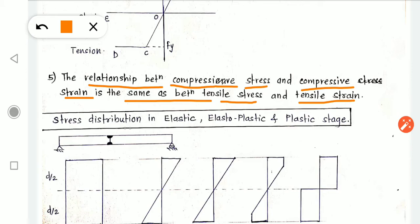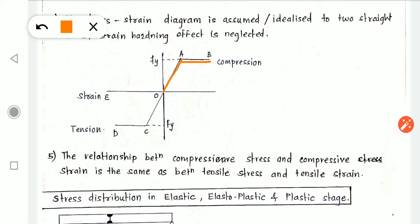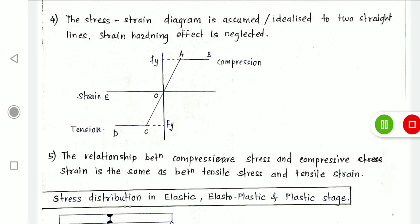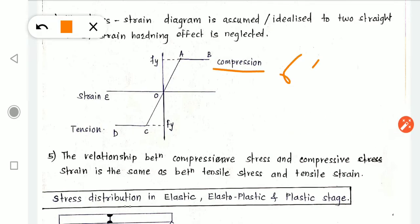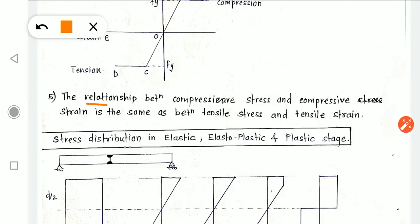The fifth assumption is: the relationship between compressive stress and compressive strain is the same as between tensile stress and tensile strain. Whatever curve applies in the compression region, the exact same curve applies in the tension region — stress is directly proportional to strain in both cases.